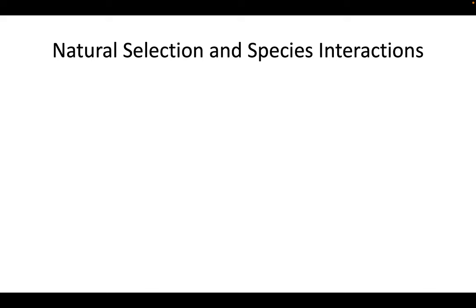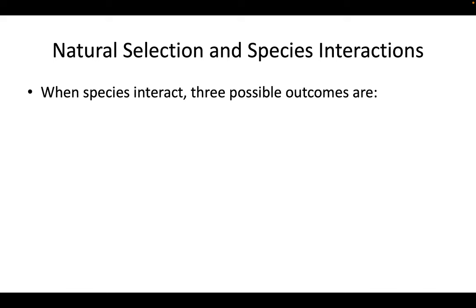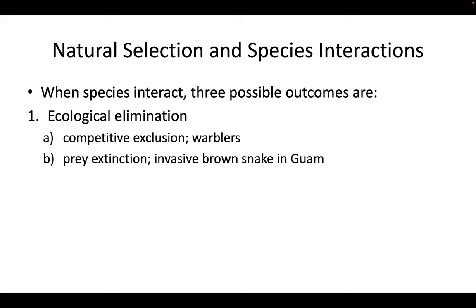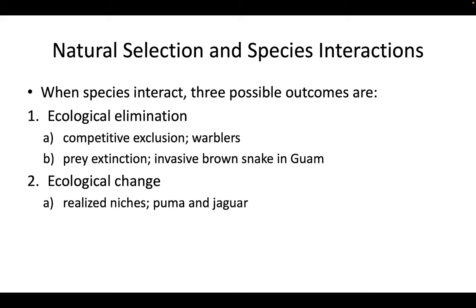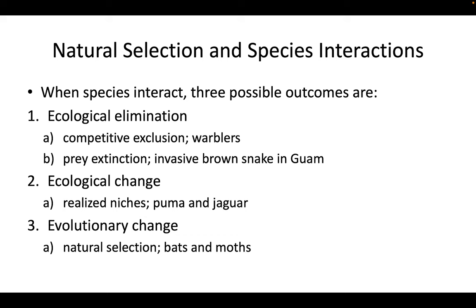If we look at these species interactions, what's going on is natural selection — survival of the fittest. There are three possible outcomes when species interact. The first is ecological elimination, like competitive exclusion with warbler species, or prey extinction, as happened when the invasive brown snake arrived in Guam and caused many native bird species to go extinct. The second is ecological change, where you have a change in realized niches — not evolutionary, just a change in ecological behavior. The third is evolutionary change, driven by natural selection.